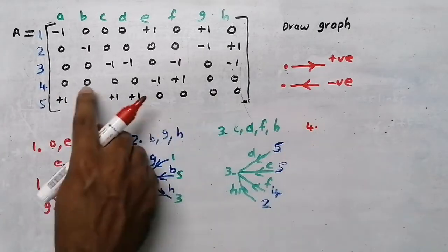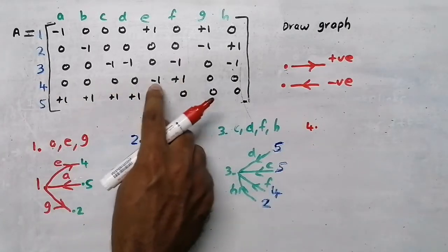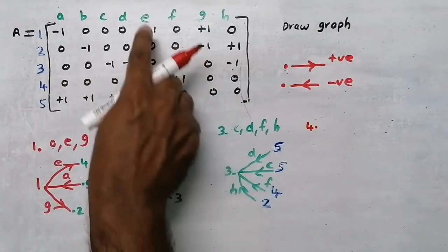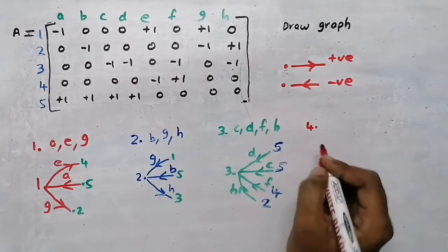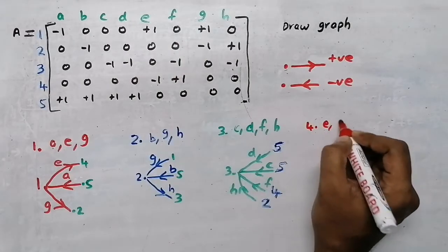Node 4 has branches e and f - there is a minus one and a plus one for each.